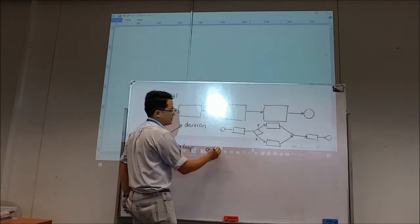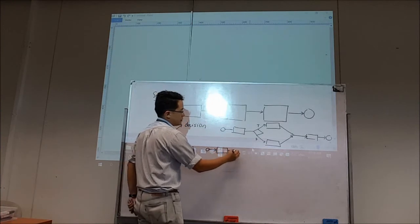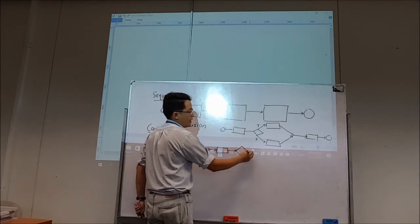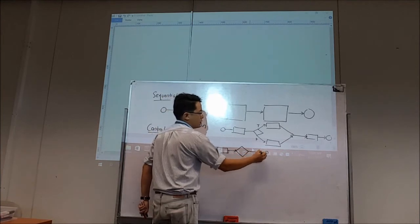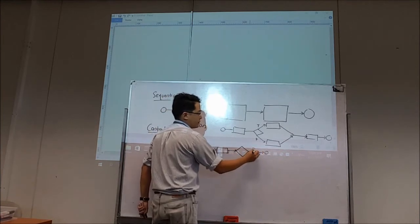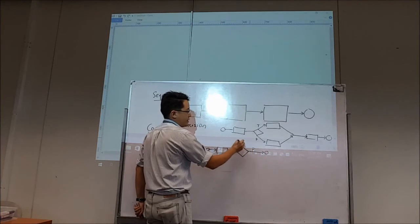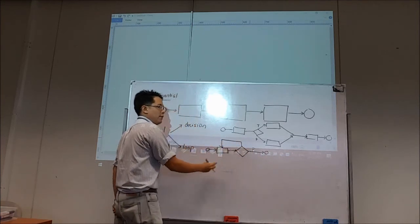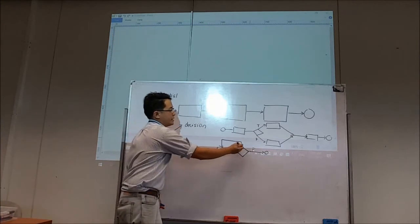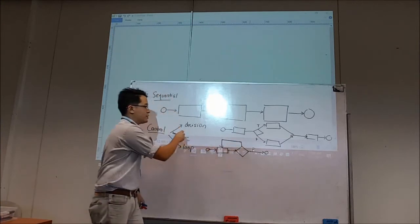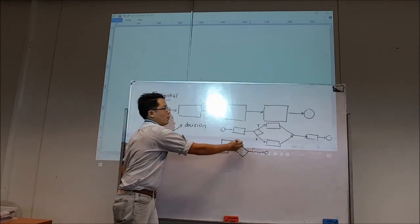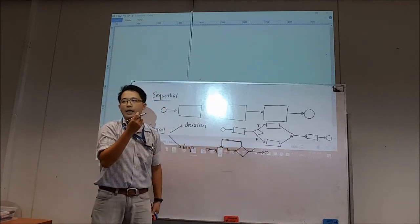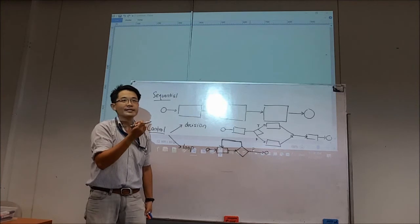So, for loop, there is a decision whether to proceed or to end. If there is a decision to proceed, then it will go back. You see, the difference of loop from decision will be that there will be an arrow going back to a previous stack.